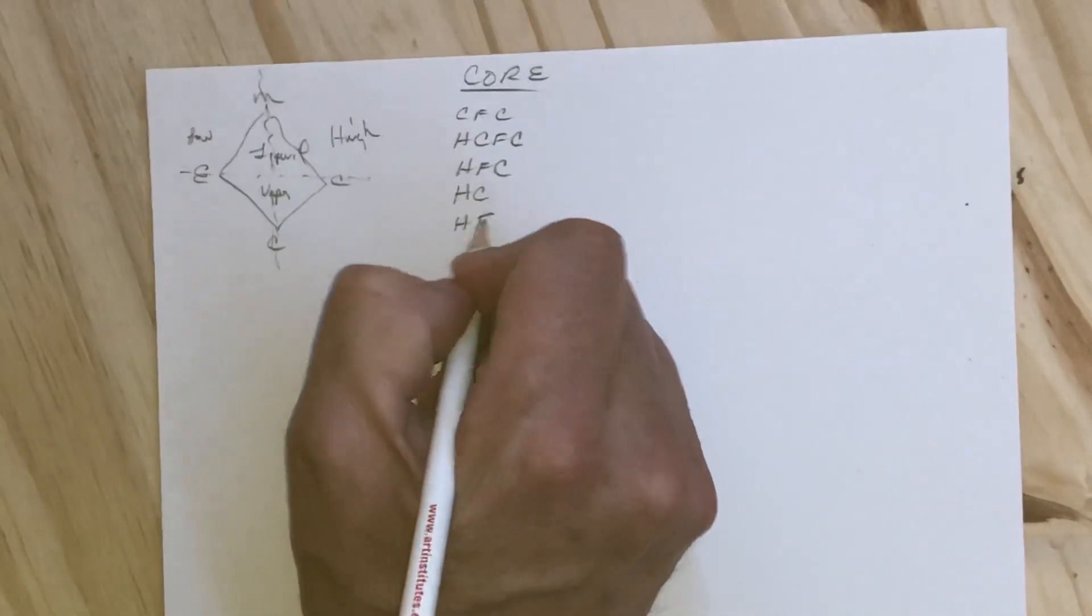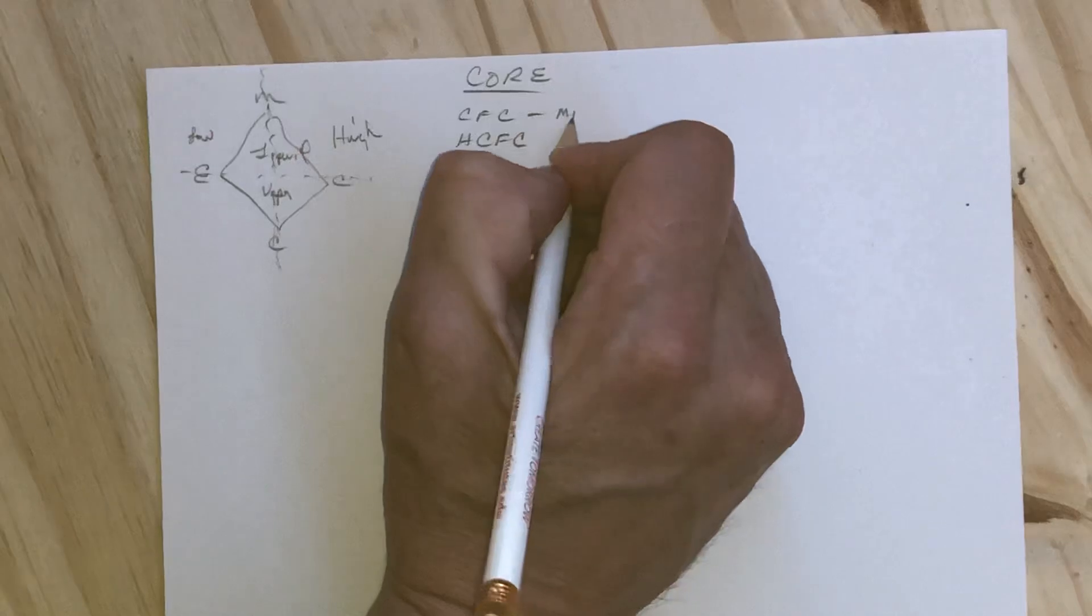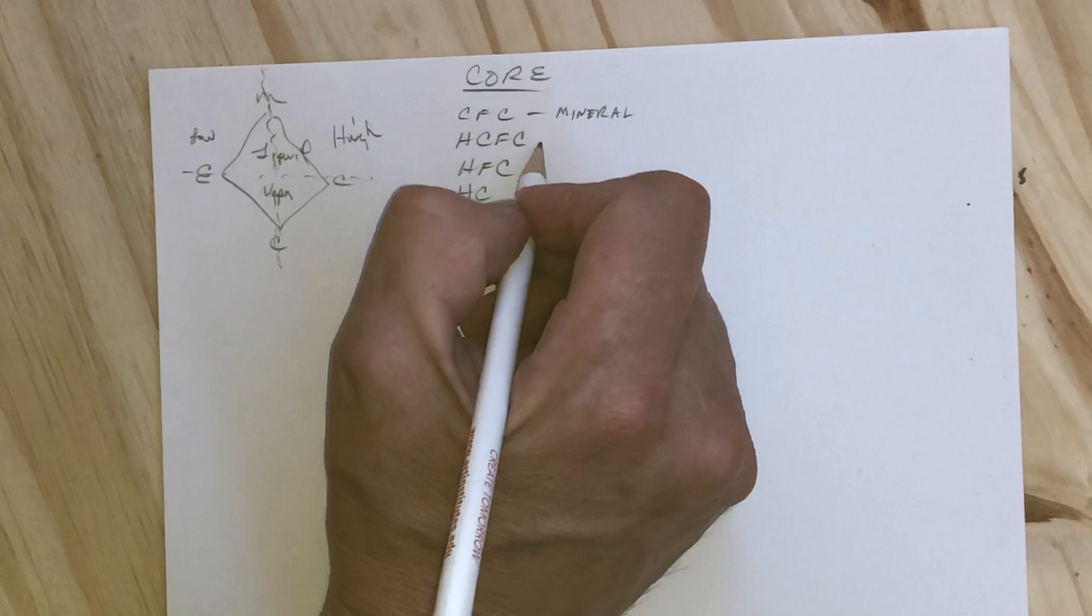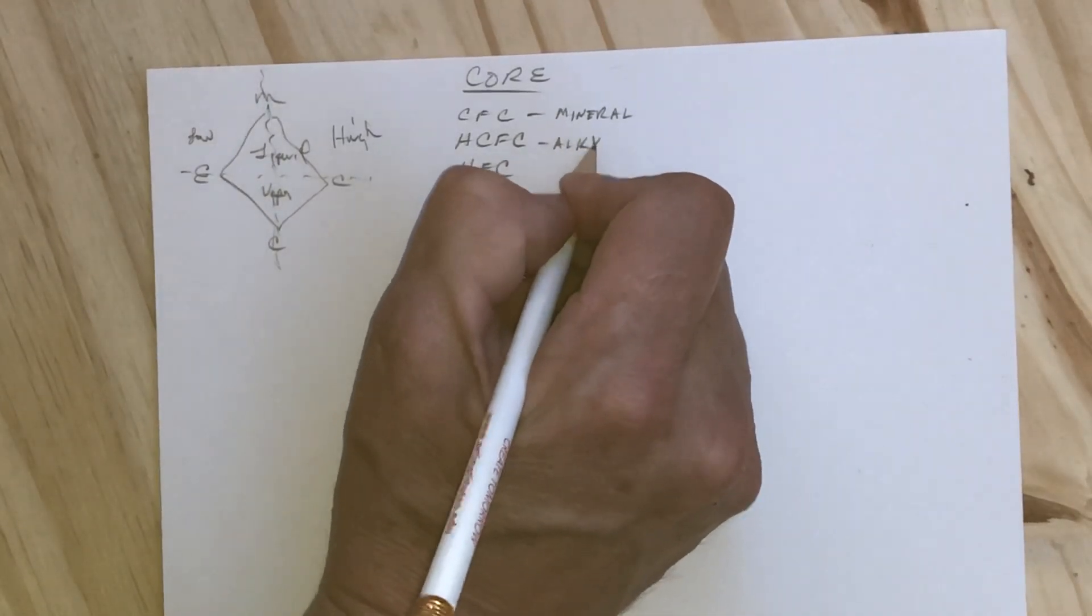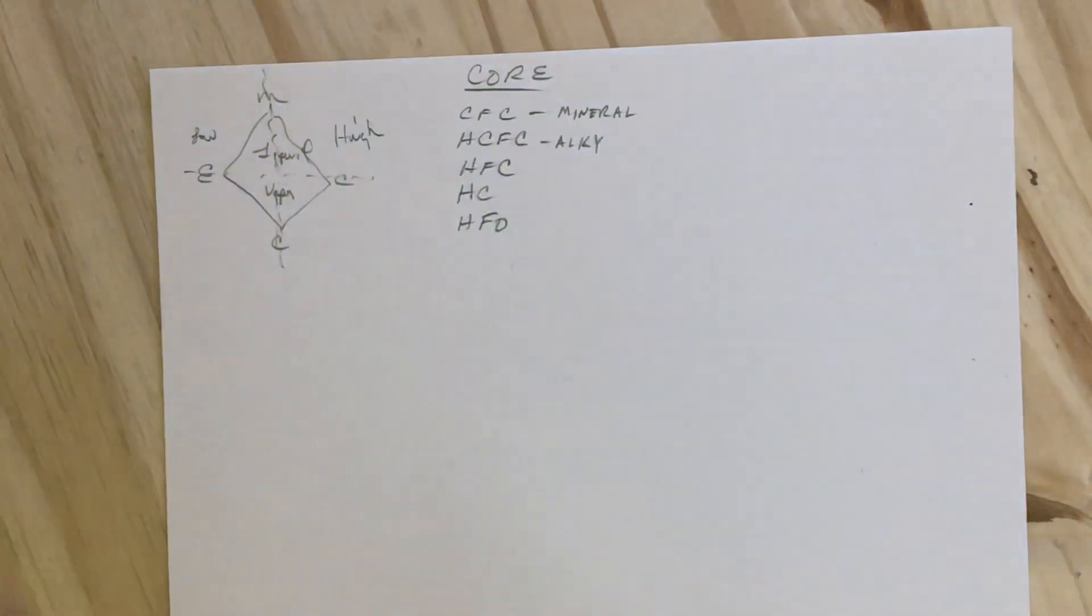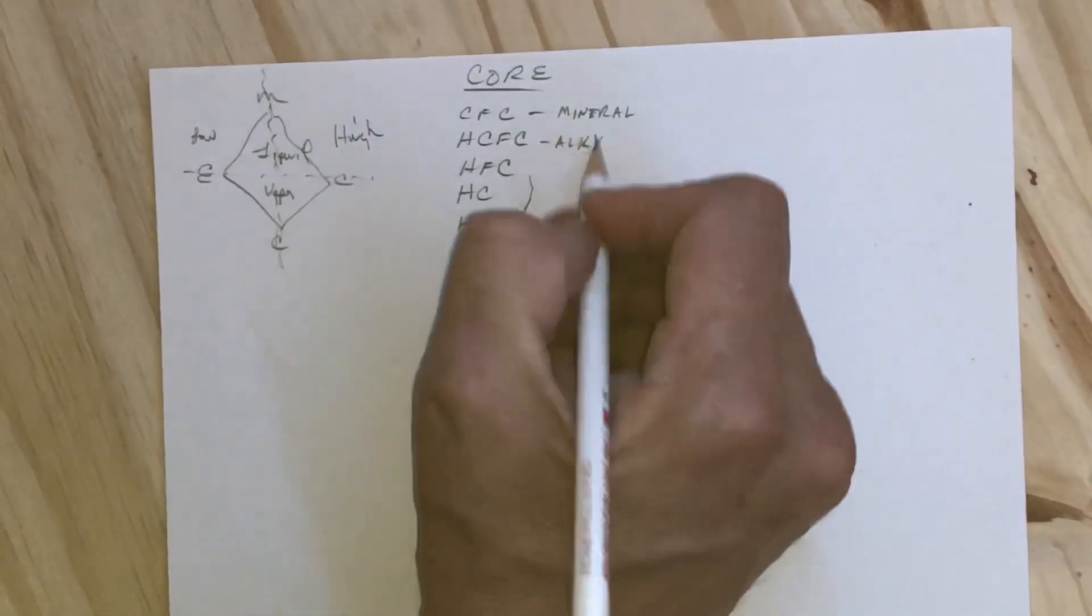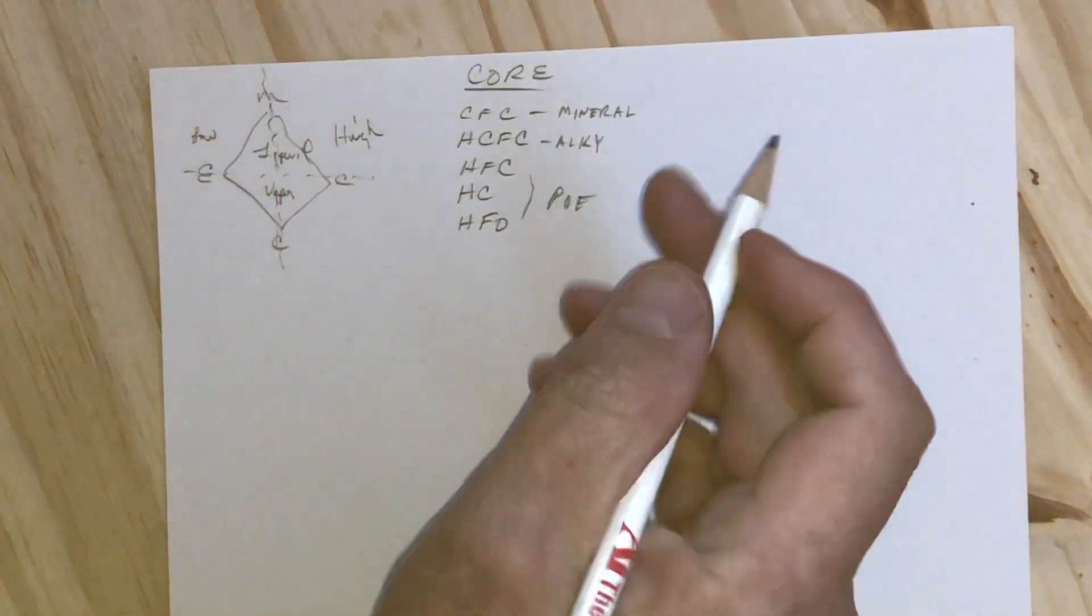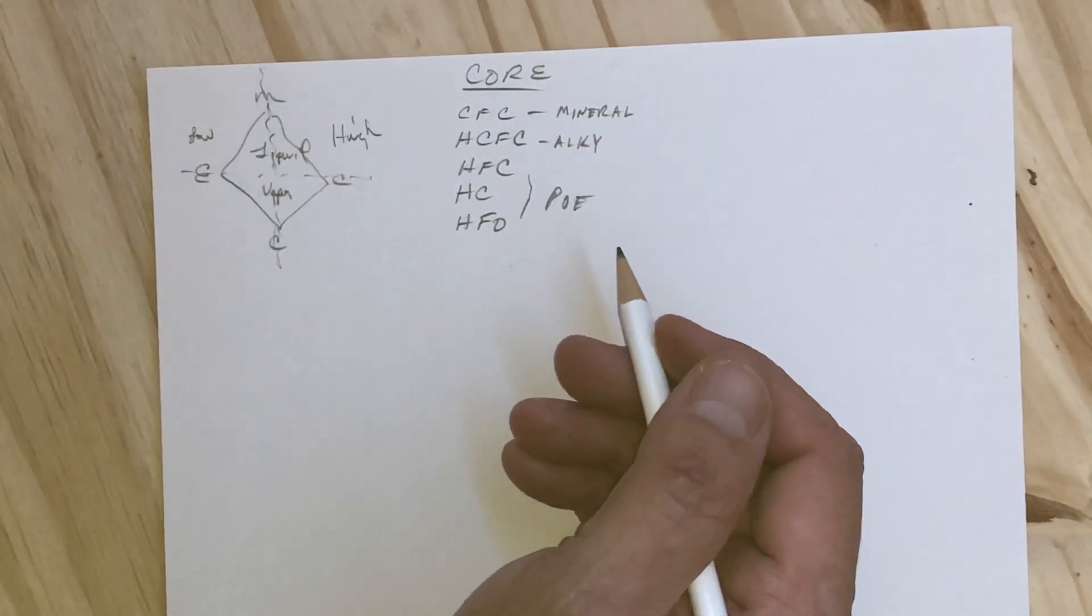With these refrigerants come their oils. Mineral is used primarily for chlorofluorocarbons and R-22, but R-22 could also use alkylbenzene with the rest of the HCFCs. These in here all use the polyester oils.